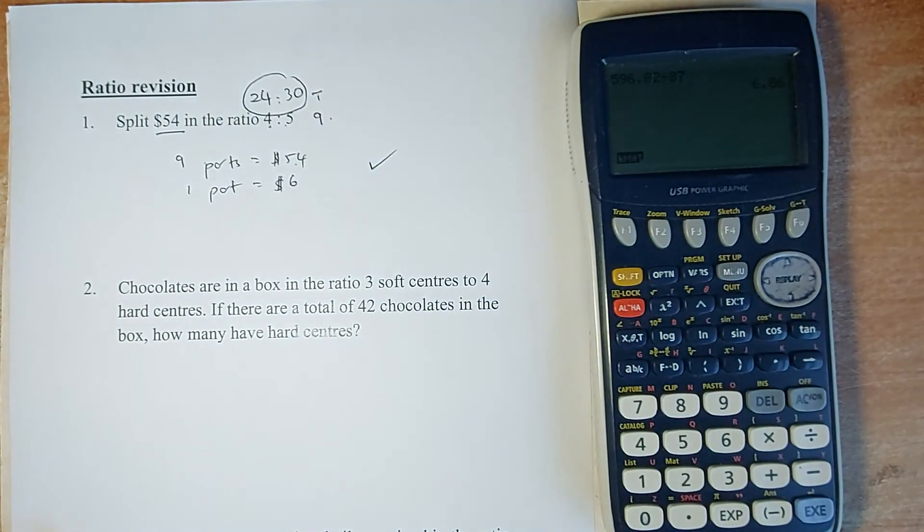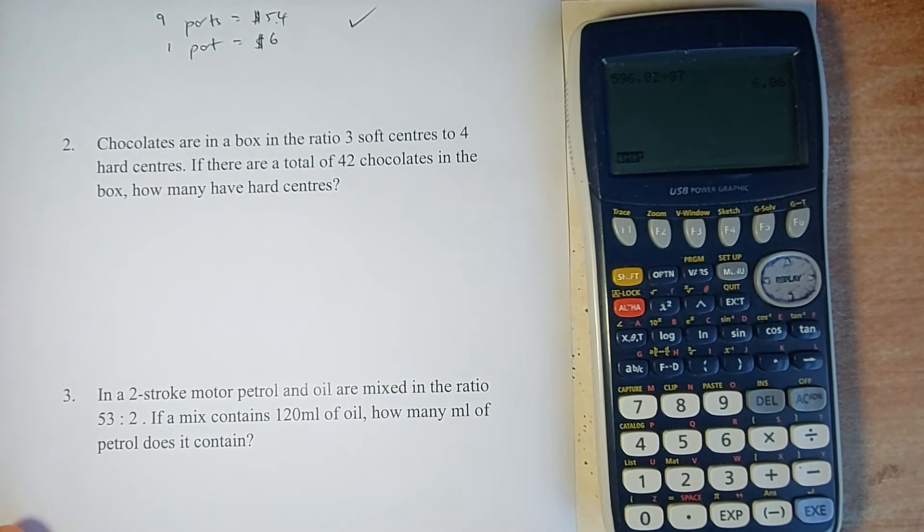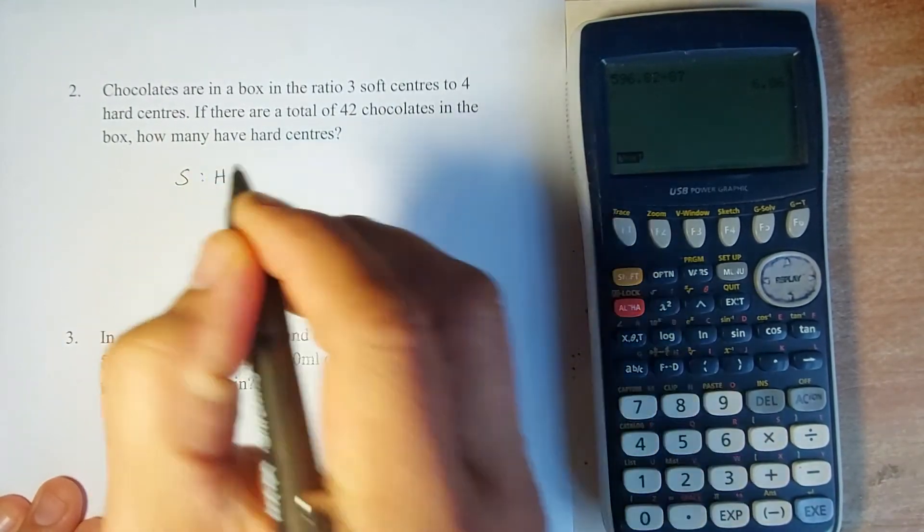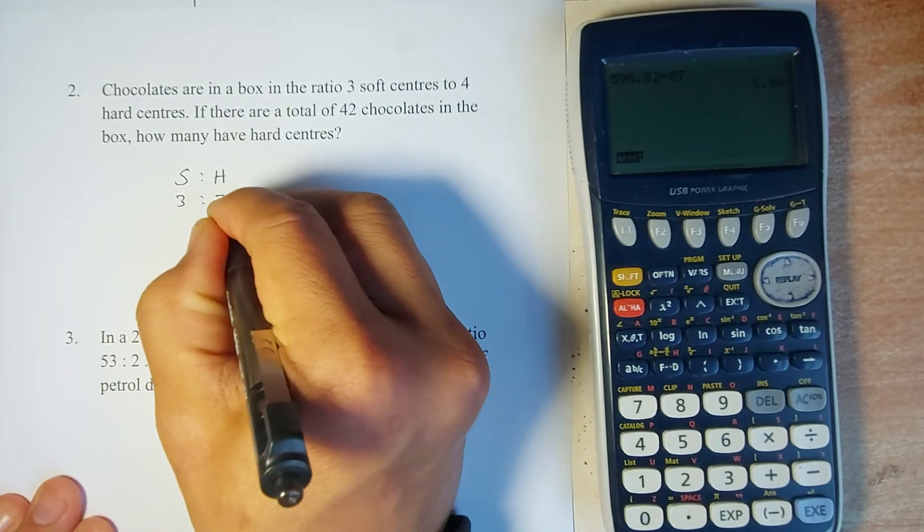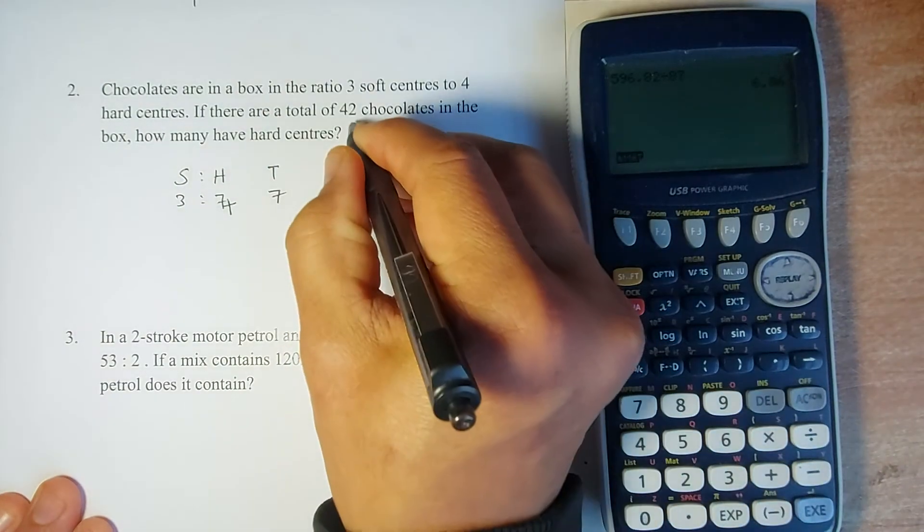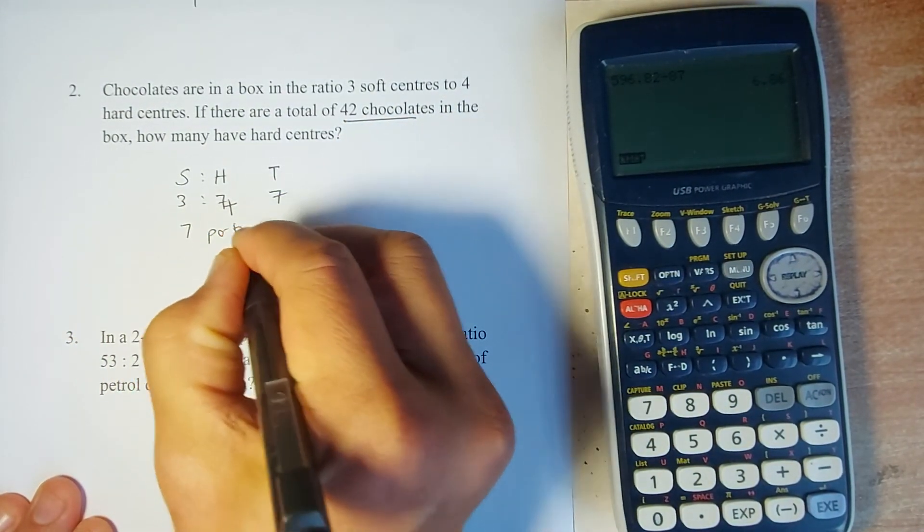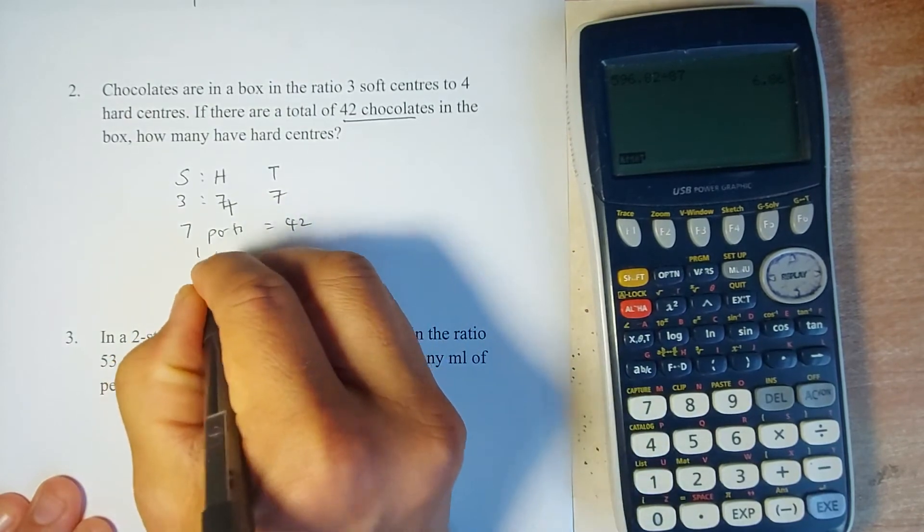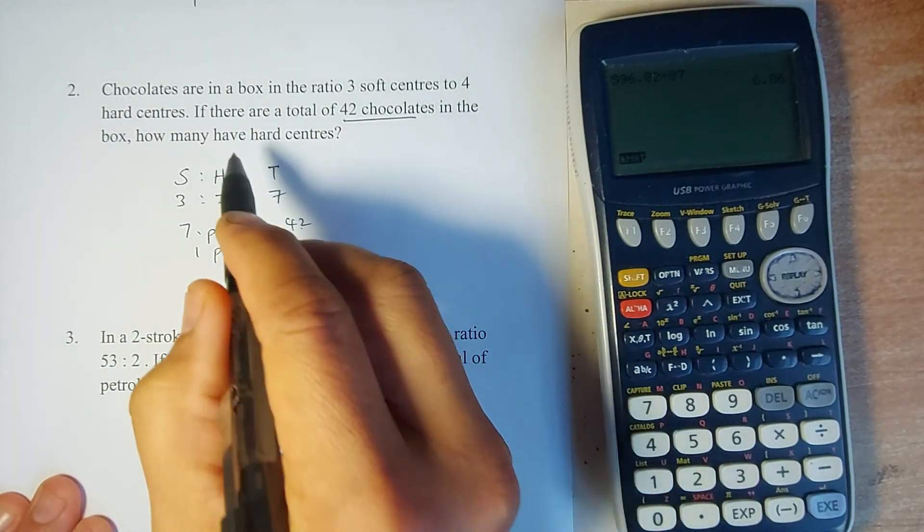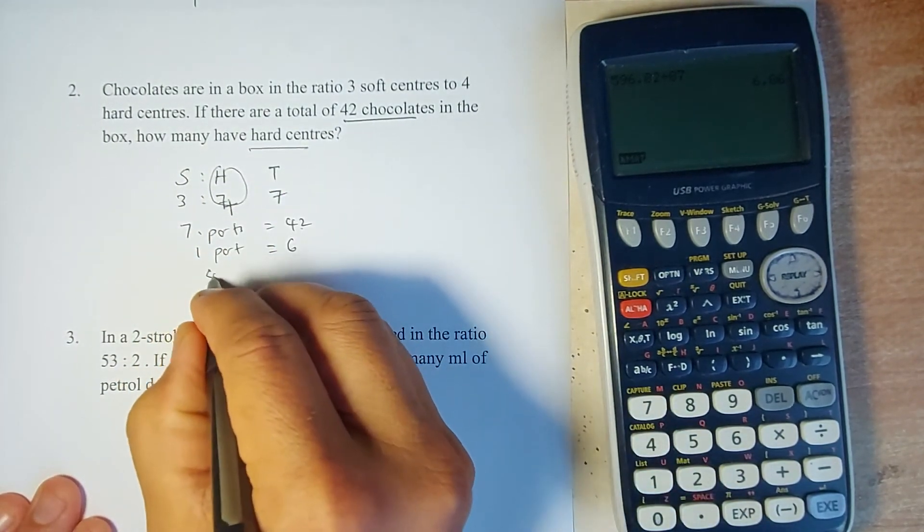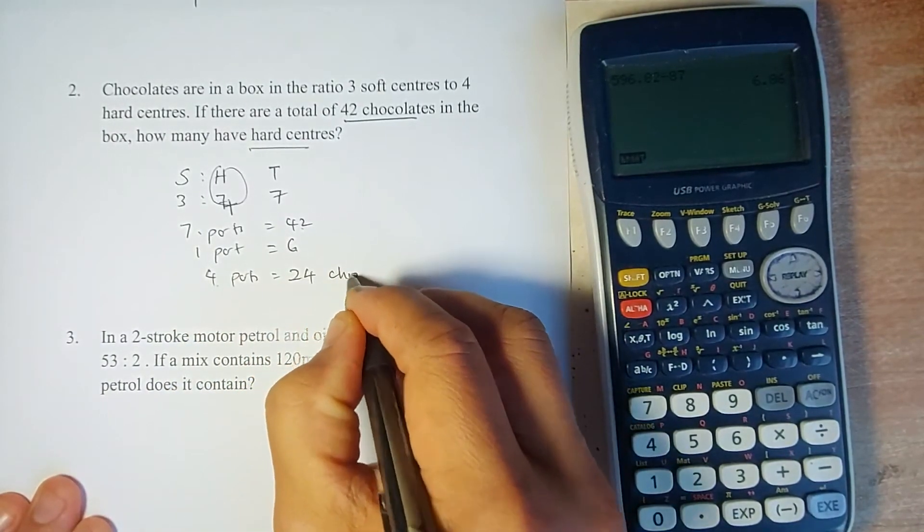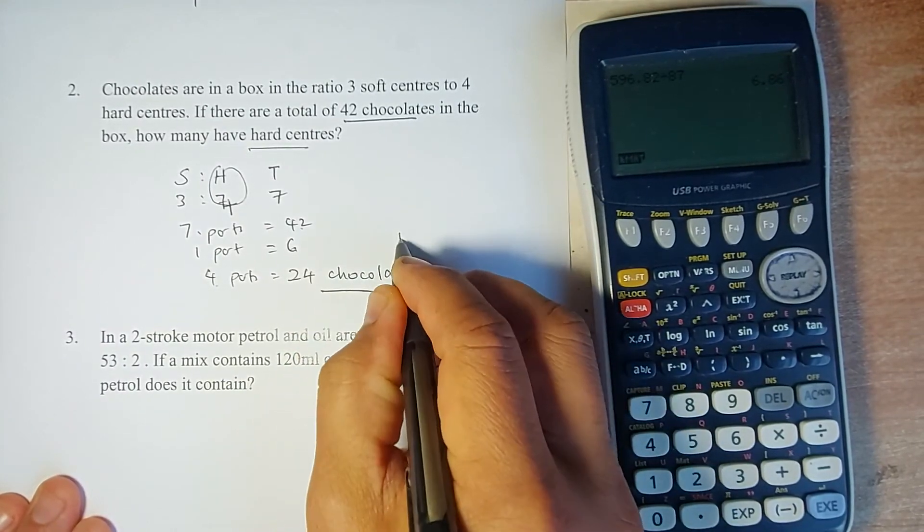Now a word problem, similar question. You have soft versus hard, the ratio is 3 to 4. First calculate the total part: the total part is 7. So 7 parts equals 42 chocolates. 1 part will be 42 divided by 7, which gives you 6 chocolates. They ask you how many are hard. Hard has 4 parts, so 4 parts is 6 times 4, which gives you 24 chocolates. Answer the question they asked, and that will give you one mark.